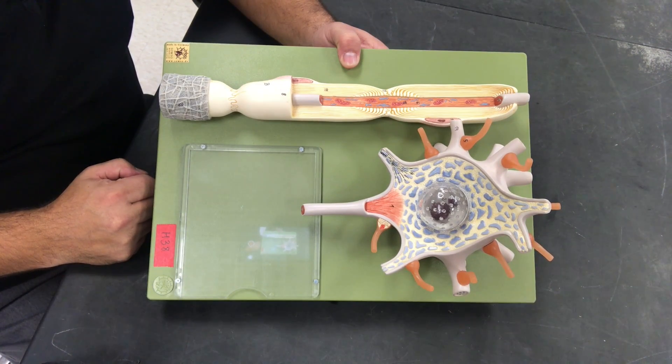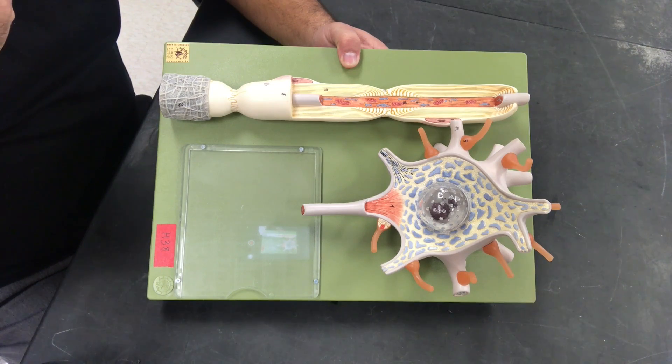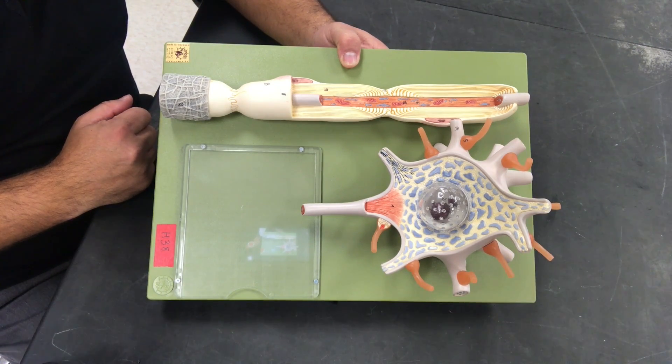In this tutorial we're going to cover and look at a multipolar neuron. We're going to work through and identify all the structures as seen in this model.